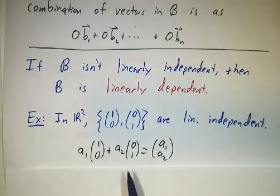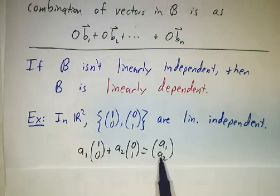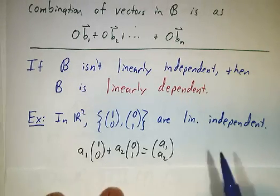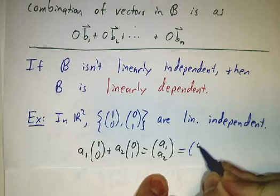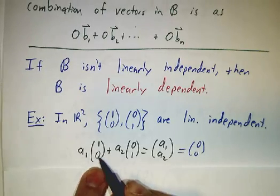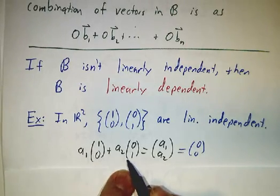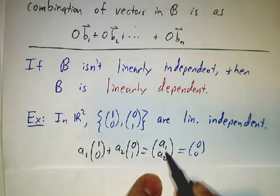Because if I have a linear combination that is equal to (0,0), well, if I take a constant times (1,0) plus another constant times (0,1), I get (first constant, second constant).